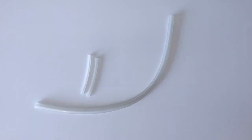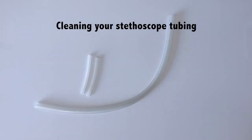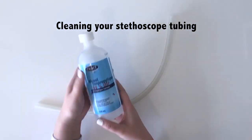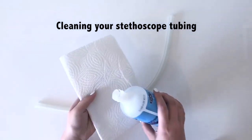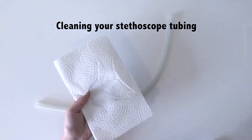Sometimes during packaging or transport, dust can collect on your tubing. We will begin by cleaning the tubing with isopropyl alcohol, also known as rubbing alcohol. This can be used at any time to clean your stethoscope.